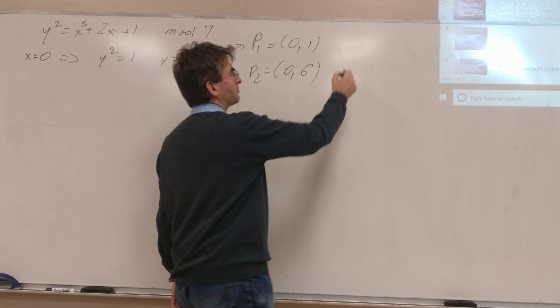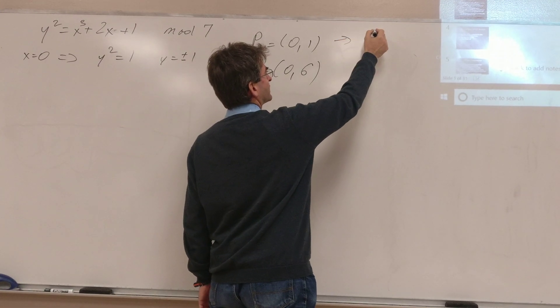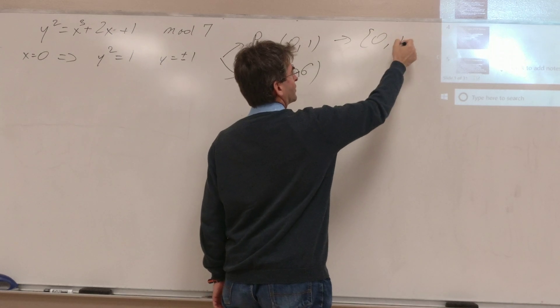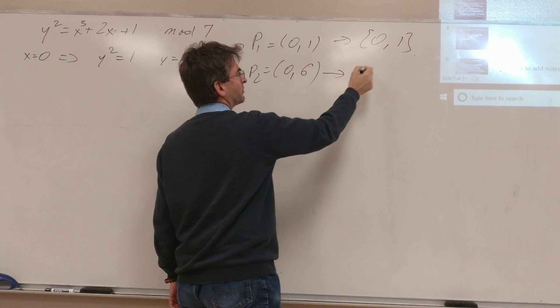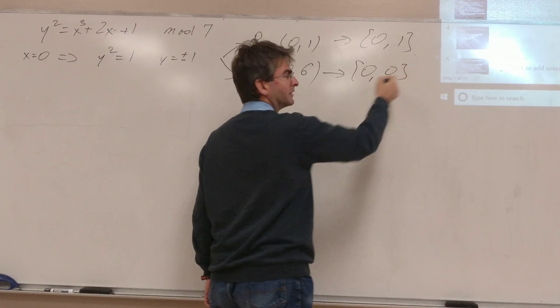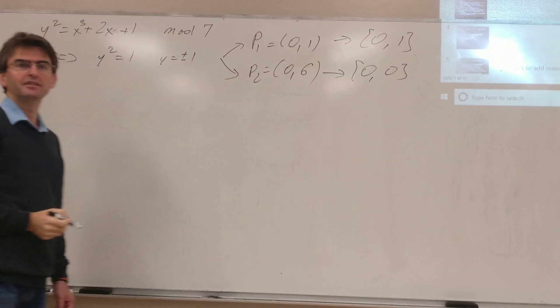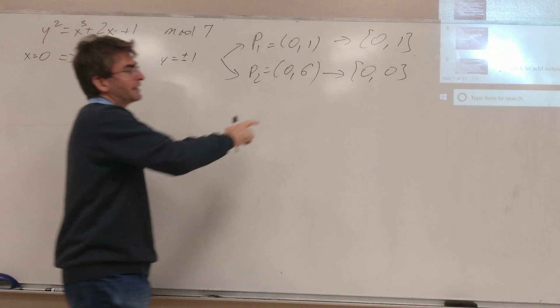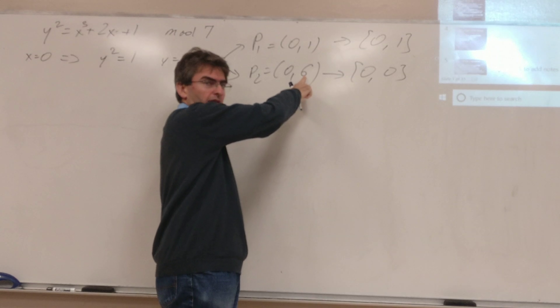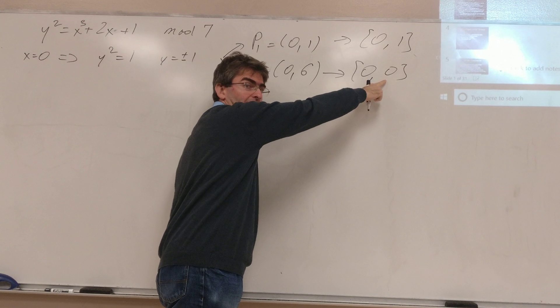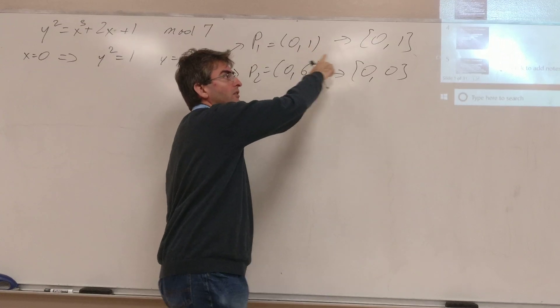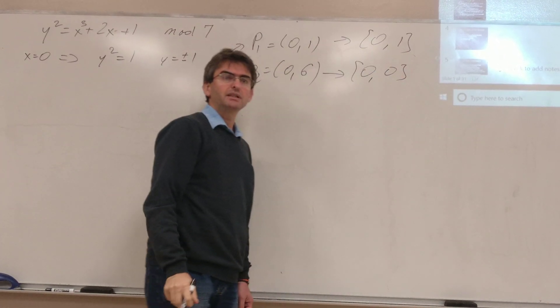Which you compress: this one is compressed as (0,1), and this one is compressed as (0,0). You take the least significant bit. 6 is even, so the least significant bit is 0, and 1 is odd, so the least significant bit is 1.